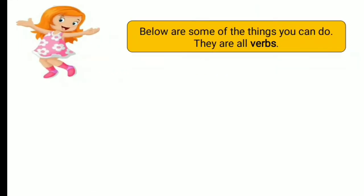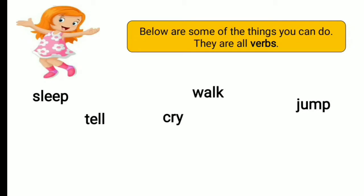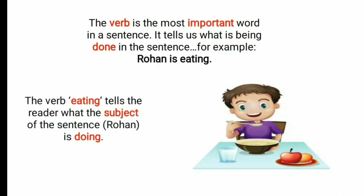Dear students, below are some of the things you can do — they are all verbs. You can walk, you can sleep, you can jump, you can cry, you can tell, you can think, you can go, you can water the plants, and you can talk. All these action words are verbs. The verb is the most important word in a sentence. It tells us what is being done in the sentence. For example, Rohan is eating — the verb 'eating' tells the reader what the subject Rohan is doing.